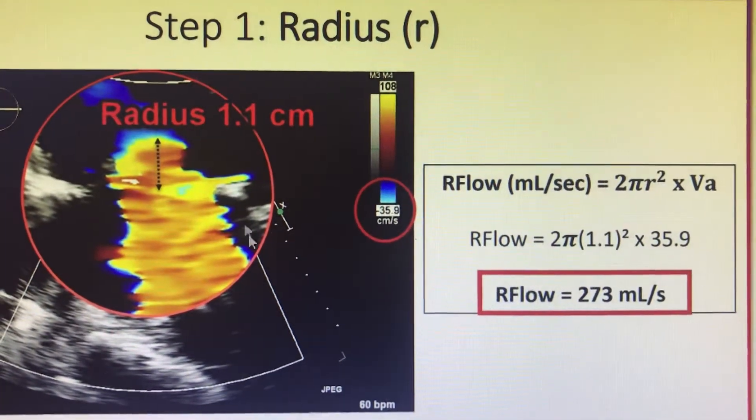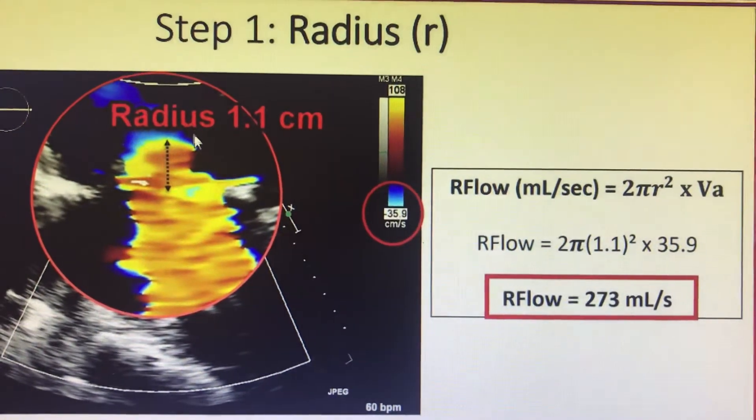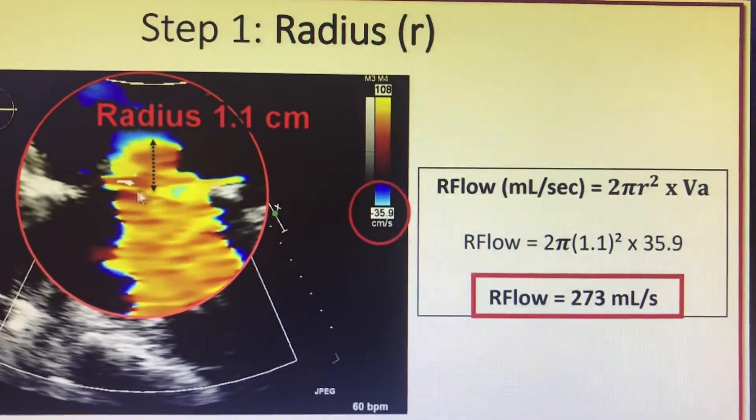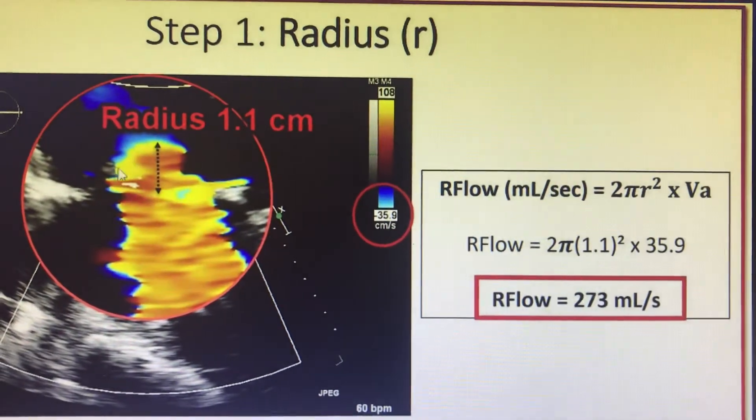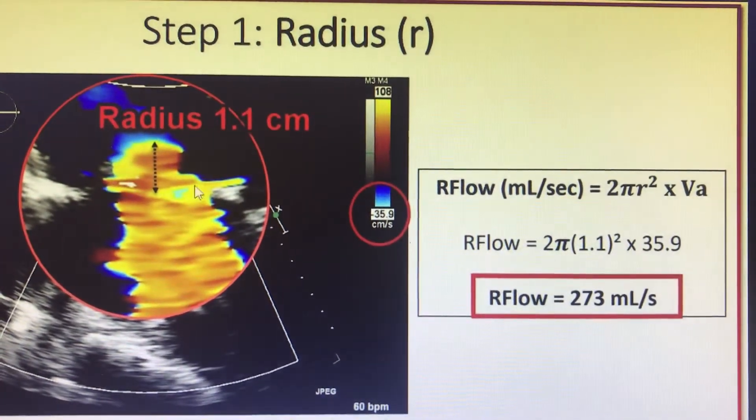You focus on a view that is apical 4 chamber, you get the regurgitation into focus and zoom it. While zooming it, you see that there is a hemispheric convergence zone being created at the valve level.